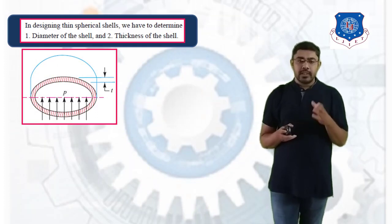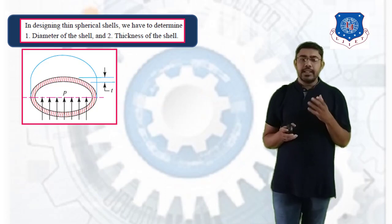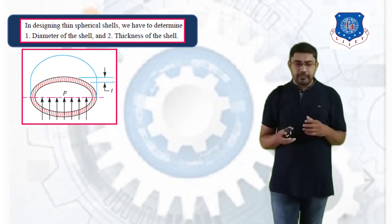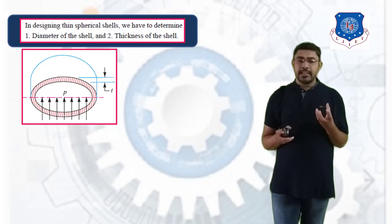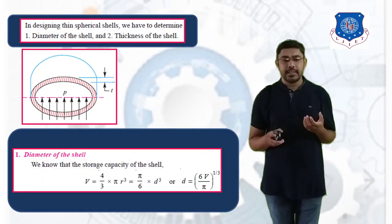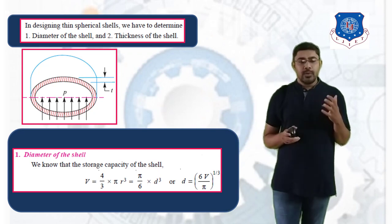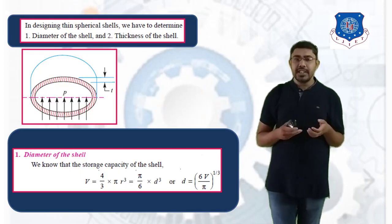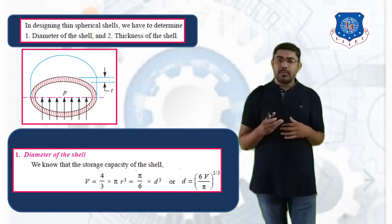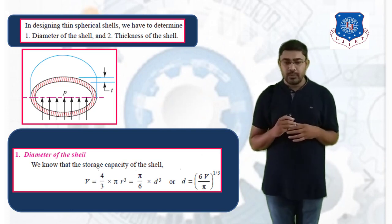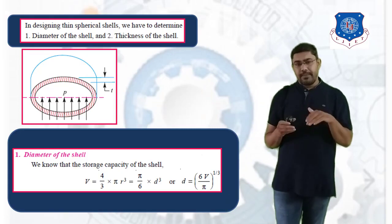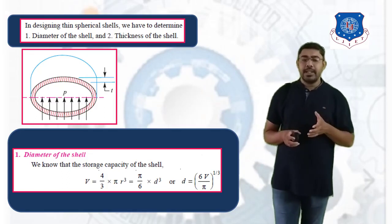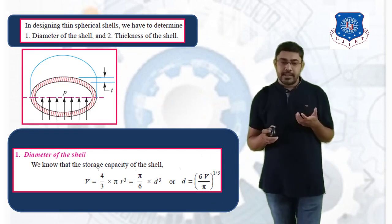As we see the spherical cell shown in a vehicle, to design the spherical cell we have to determine: first, the diameter of cell, and second, the thickness of cell. As the cell is in shape of a spherical cell, we know the capacity of spherical cell, that is the volume of spherical cell. That is V = (4/3)·π·R³, or in terms of diameter, V = (π/6)·D³. Simplifying, we get D = (6V/π)^(1/3). This is the diameter of the spherical cell according to the volume capacity.